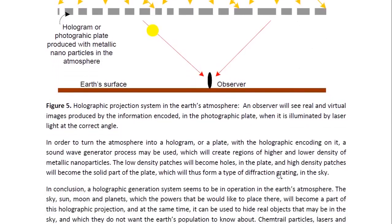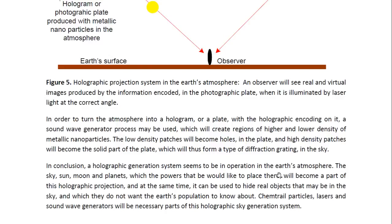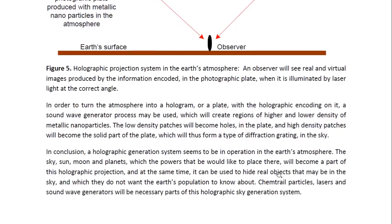Now, in order to turn the atmosphere into a hologram or plate with the holographic encoding on it, a sound wave generator process may be used, which will create regions of higher and lower density of metallic nanoparticles. The low density patches will become holes in the plate and high density patches will become the solid part of the plate, which will thus form a type of diffraction grating in the sky.